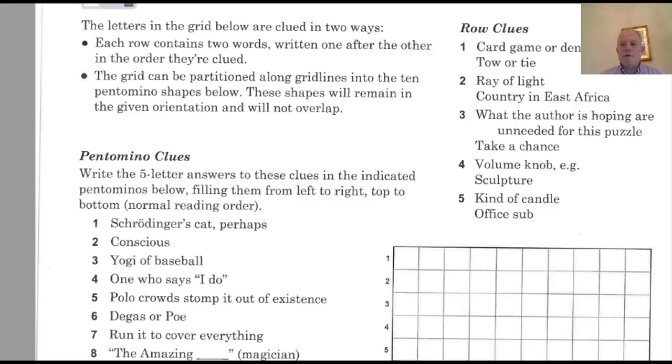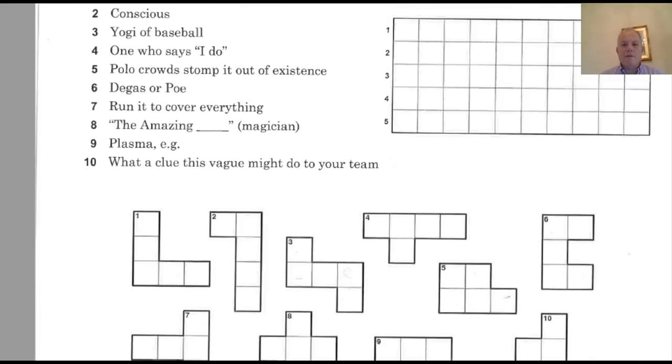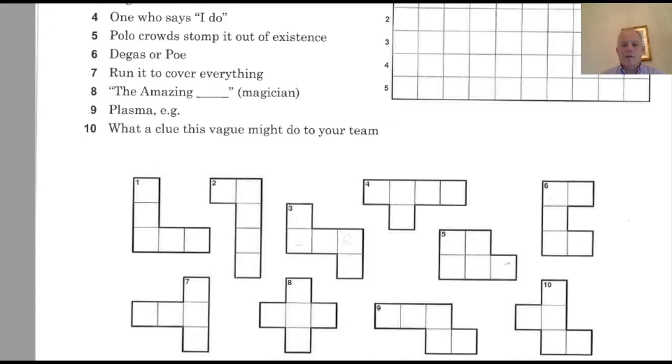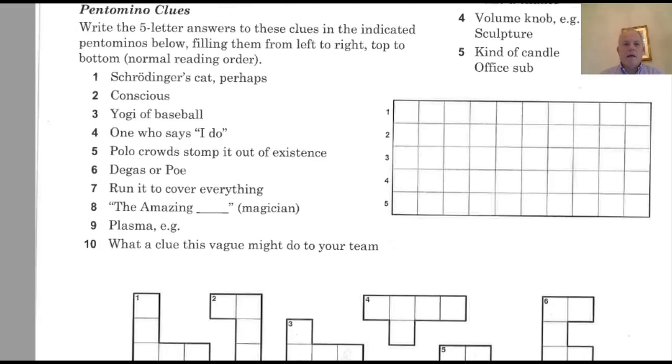And the grid can be partitioned into the 10 pentomino shapes below. These shapes will remain in the given orientation and won't overlap. So here are the pentomino shapes down here, all numbered. And it says, write the five-letter answers to these clues in the indicated pentominoes, filling them from left to right, top to bottom, normal reading order.